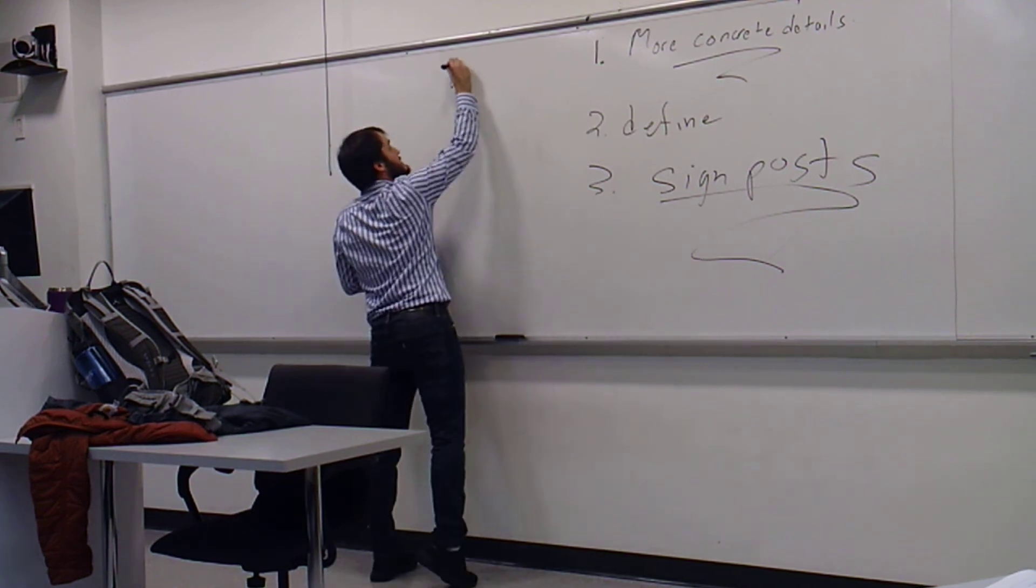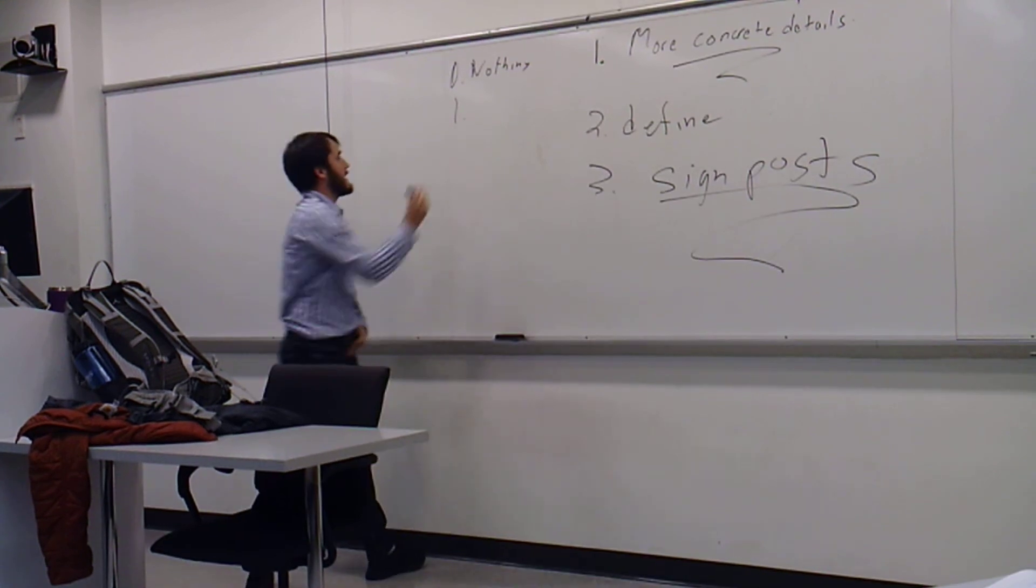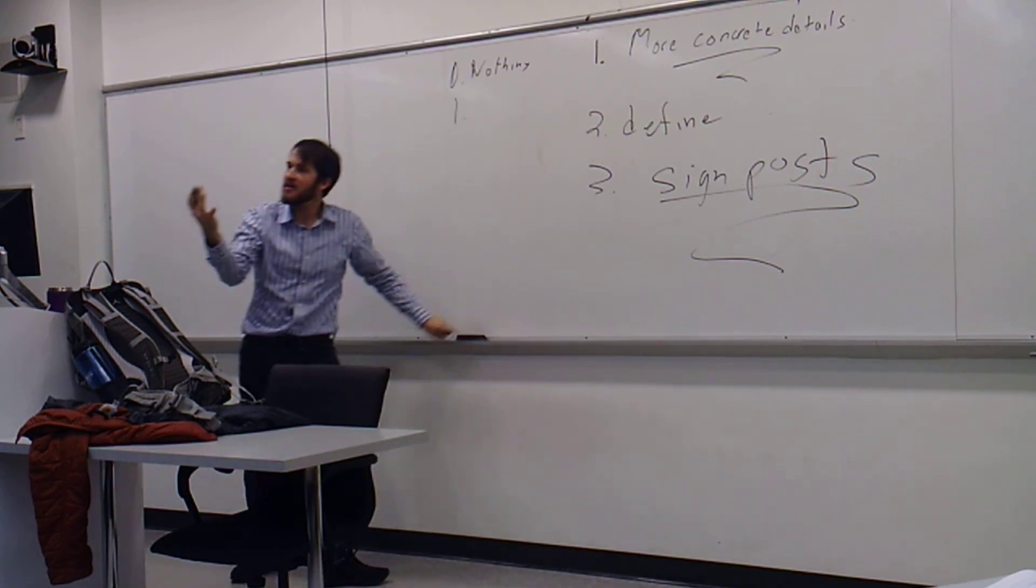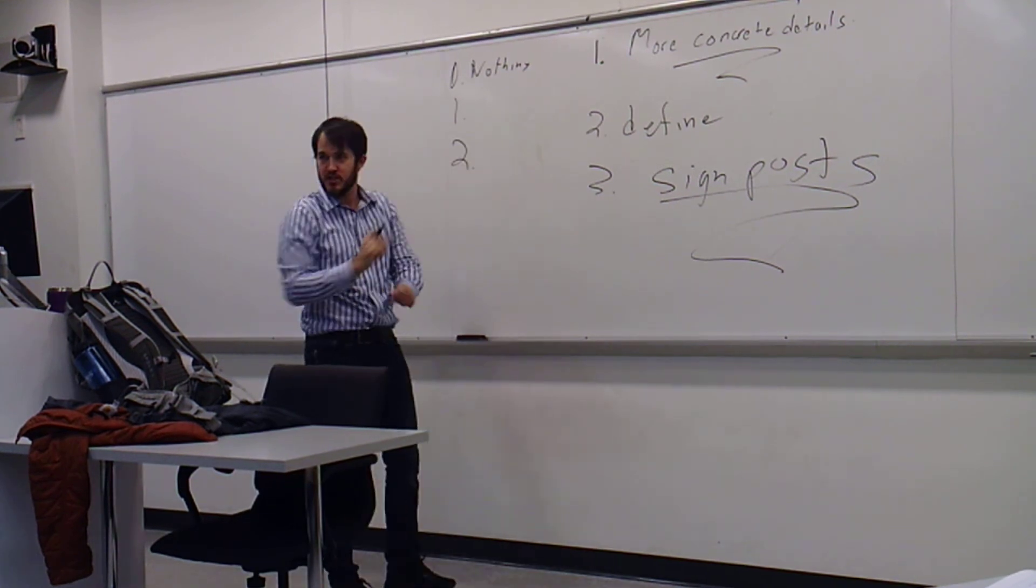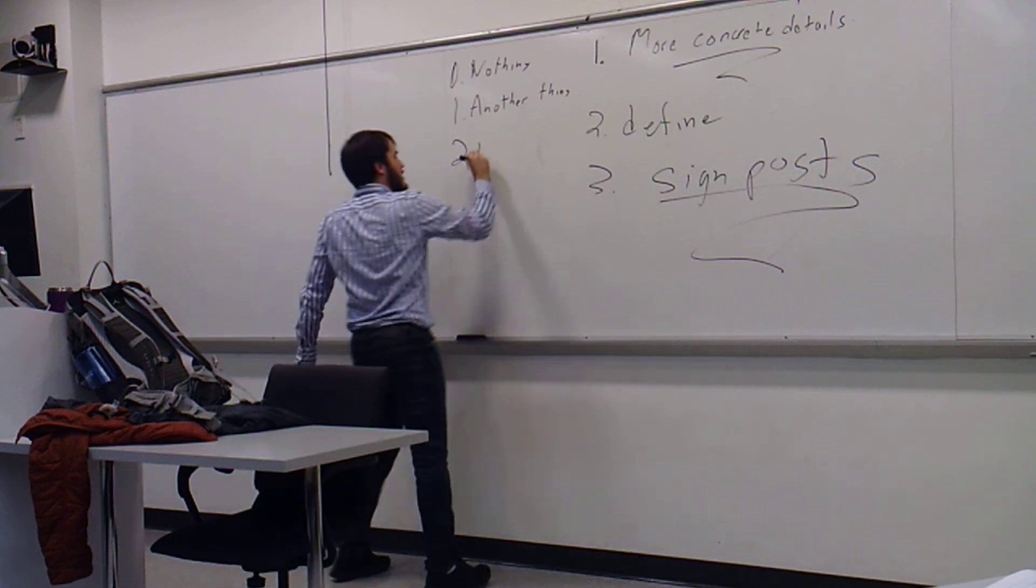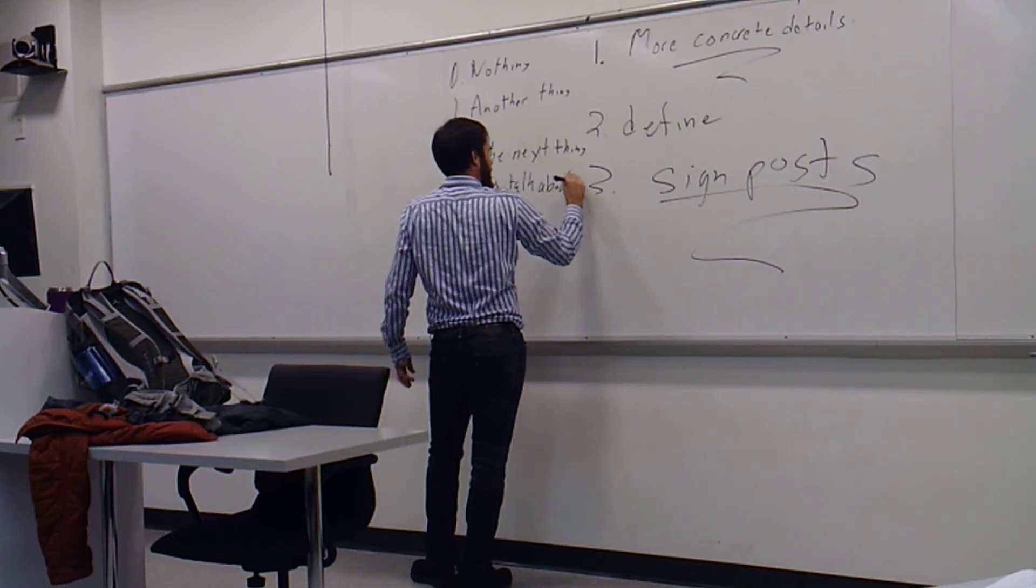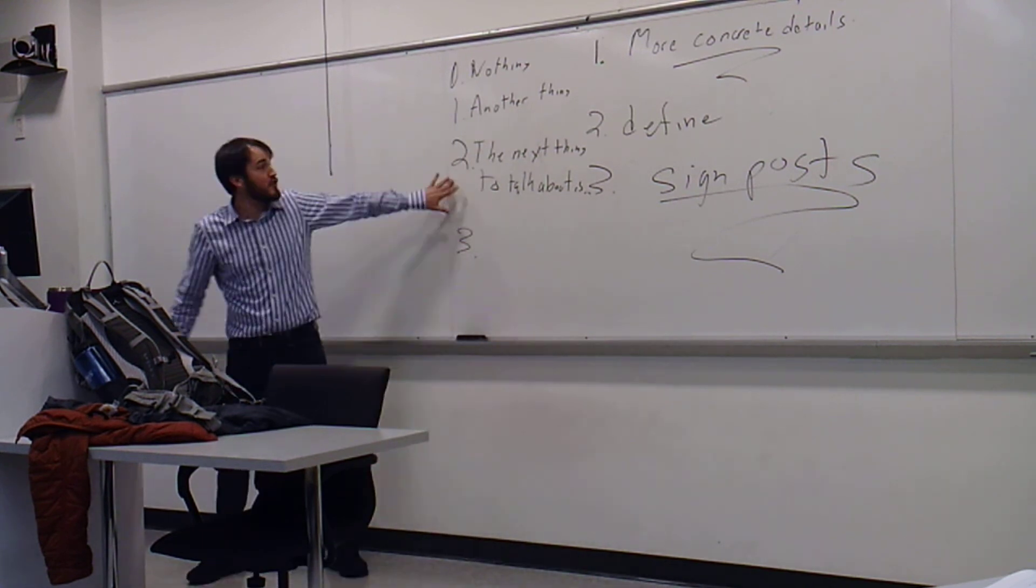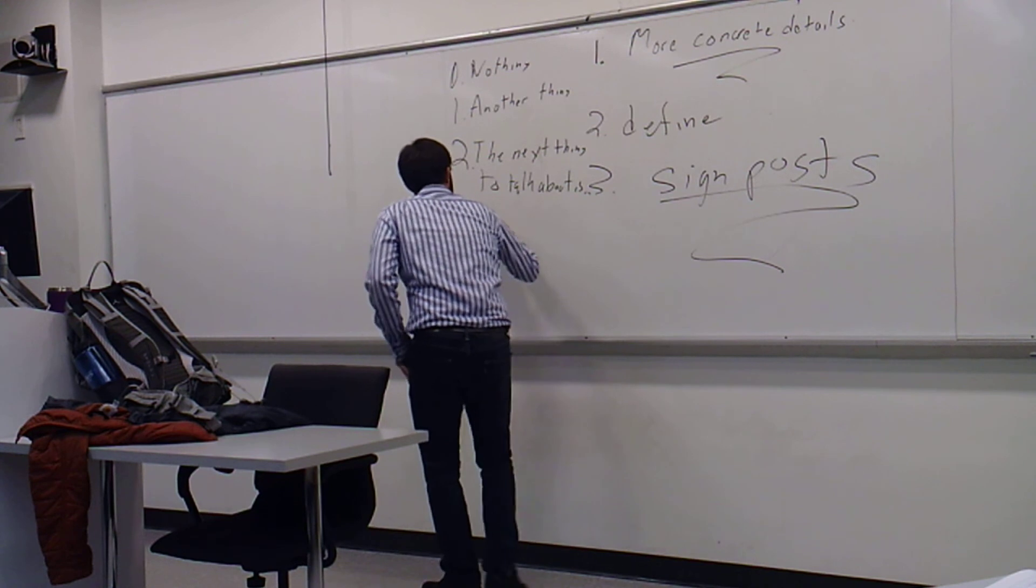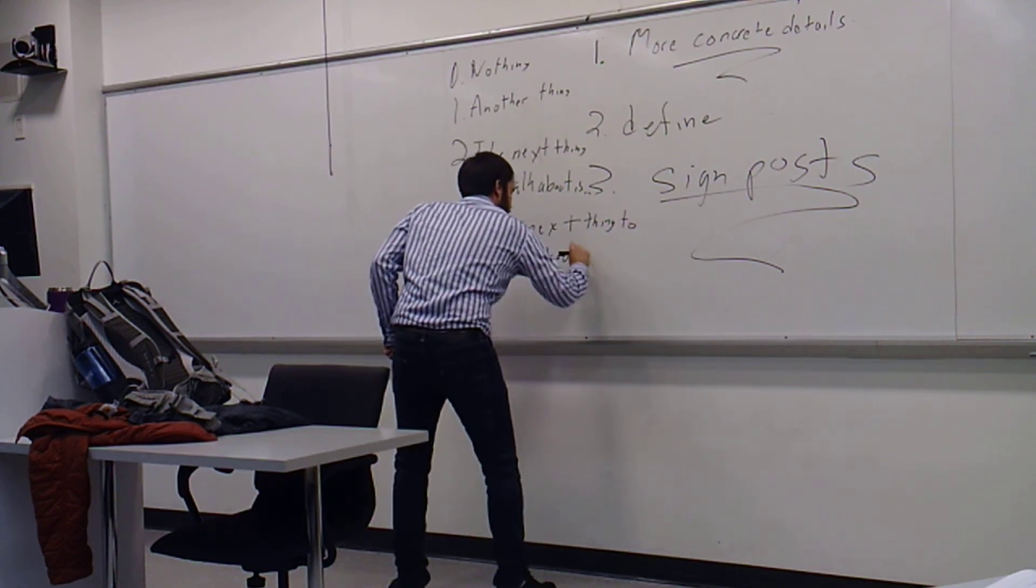You can think about it in tiers. A non-existent signpost just starts a sentence with something like, data mining is the practice of yadda yadda. That's not having a signpost. And that takes the... remember, the goal is to guide me, the reader, to follow along as cleanly as possible. Level zero is nothing. Level one is something like another thing. Level two is, the next thing to talk about is, and then does anyone know what number three is? It starts the same way as number two. It just continues after the dot dot dot with, the next thing we'll talk about is...